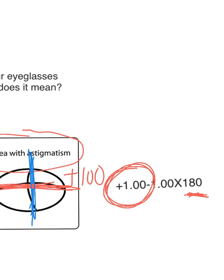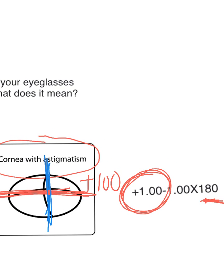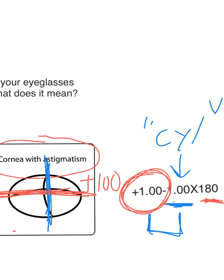To find out the power of the second meridian — it is not minus one, which could be confusing. The second number, by the way, is called the cylinder, or CYL for short. The second meridian is not minus one, but the combination of these two numbers. So if you do plus one, minus one, you get zero — the power of the vertical meridian is plano, or zero.